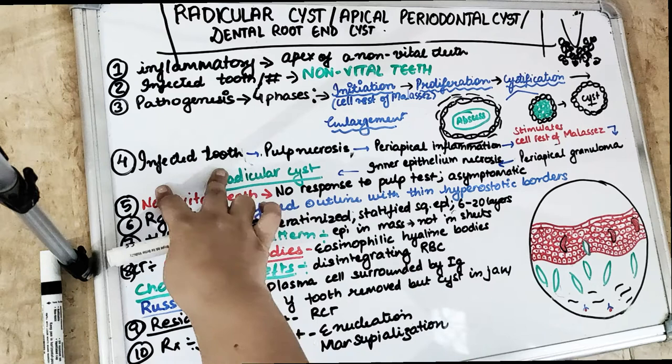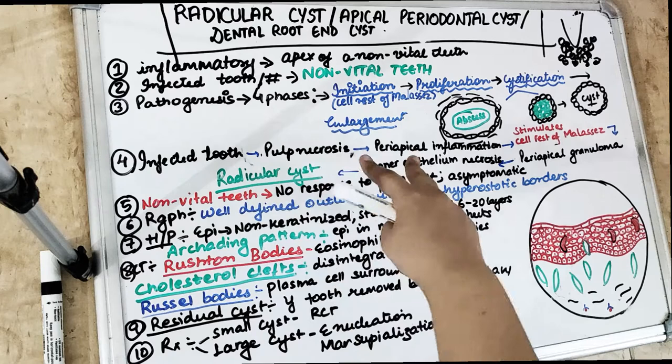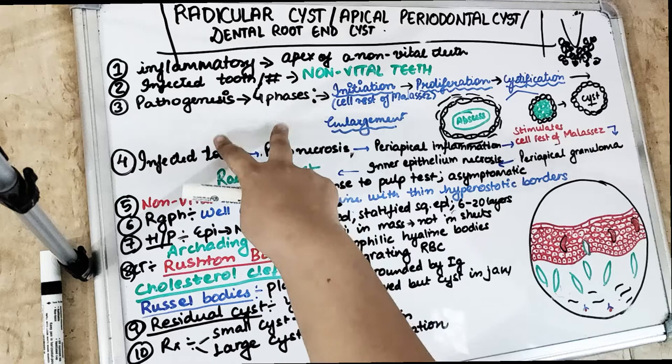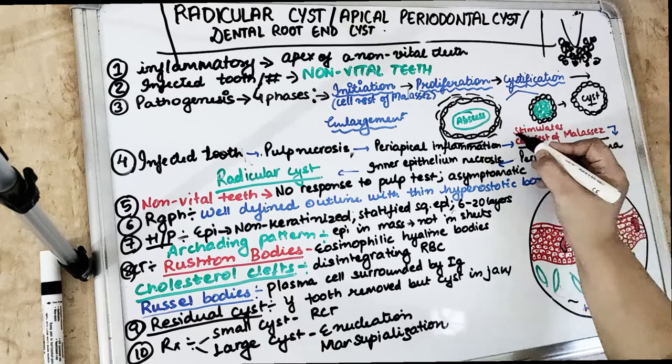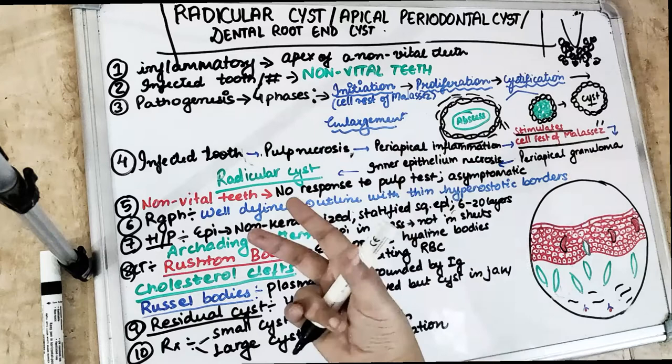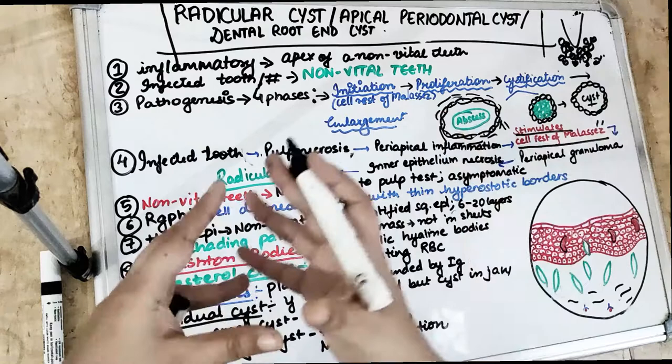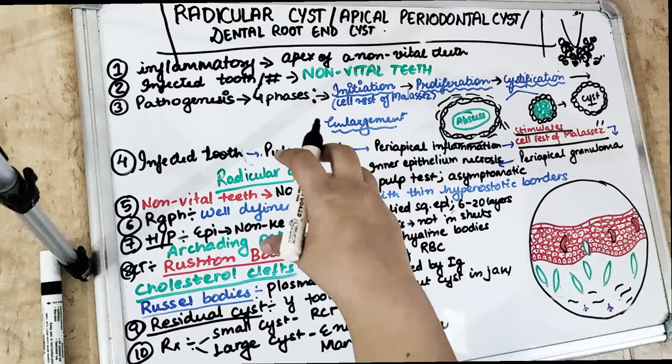When the tooth gets infected there is pulpal necrosis, followed by inflammation in the periapical area. This periapical inflammation stimulates the cell rests of Malassez — the actual cells involved in radicular cyst formation, which you must remember. Because of this, a periapical granuloma forms, and cells proliferate in the periapical area. The inner epithelium or center cells of that granuloma undergo necrosis, resulting in formation of the radicular cyst.